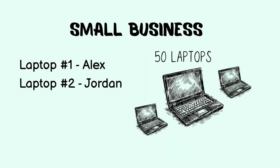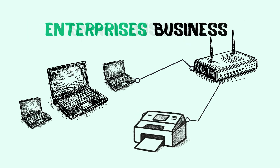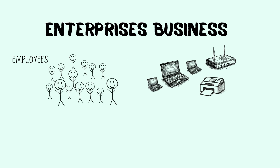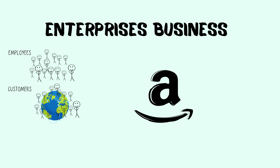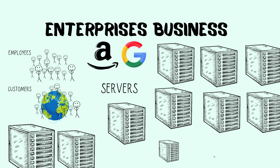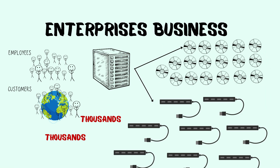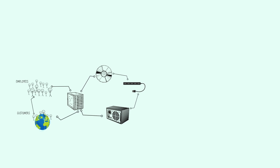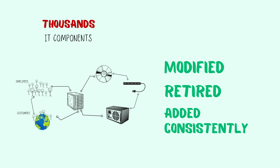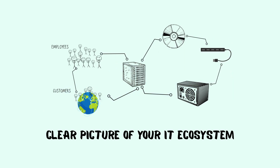For smaller businesses, there are just a few laptops assigned to staff, some in a closet with a router, and a printer in the meeting room. But for enterprises — multinational companies dealing with thousands of employees and customers across continents — enterprises like Amazon or Google operate dozens of data centers, each containing thousands of servers, each running thousands of disks, ports, and power supplies. They are all interconnected, coexisting to deliver optimized value. Those thousands of IT components are being modified, retired, or added consistently. CMDB sweeps through every asset and identifies its connections, giving you a clear picture of your IT ecosystem.